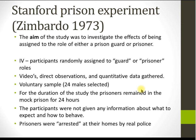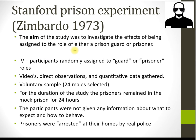So, 1973 — the aim of the study is to investigate the effects of being assigned either to the role of a prisoner or a guard in a mock prison. The independent variable — the thing he's changing — is whether you are randomly assigned to be a prison guard or a prisoner. Remember, random allocation is really important in lab studies. Videos, direct observation, and quantitative data were gathered throughout the study.